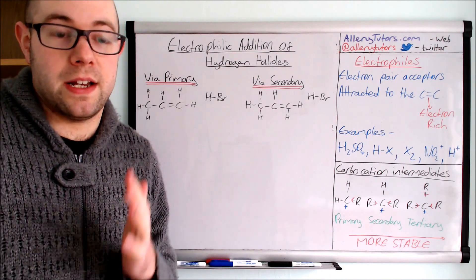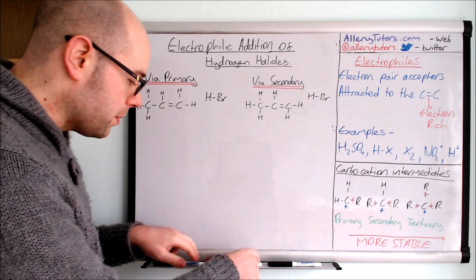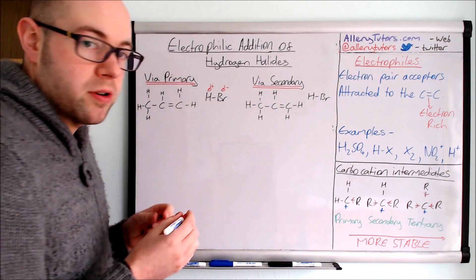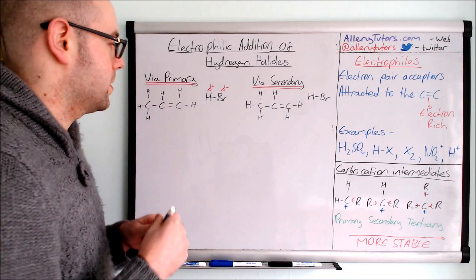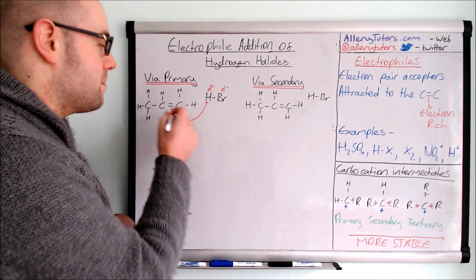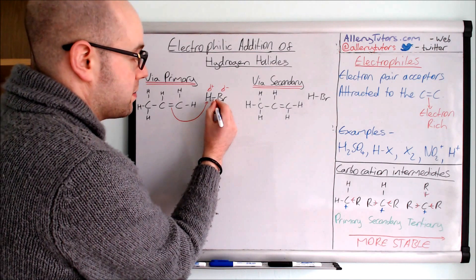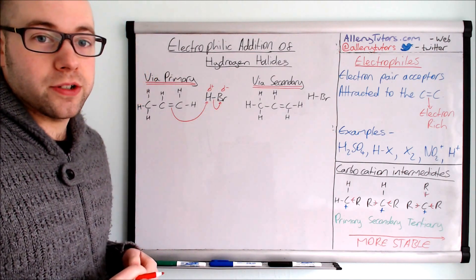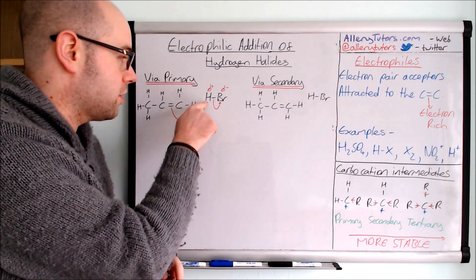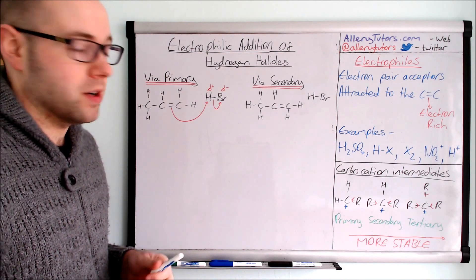We're going to start with the primary method first. You can see our hydrogen halide and our alkene. The first thing to do is put your delta positive on the hydrogen and delta negative on the bromine, then draw your curly arrow. The curly arrow goes from the alkene onto the delta positive H, because the double bond is electron rich. Once it's done that, this bond breaks so an arrow goes from this bond onto the bromine. In the exam they're looking for the polarities on your molecule and these two arrows — you must be very specific with your arrows.